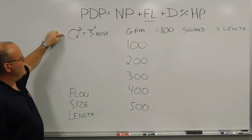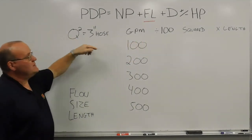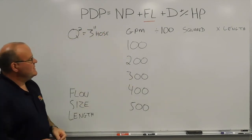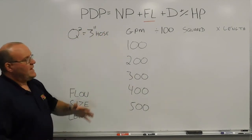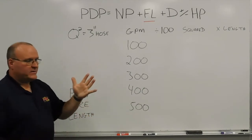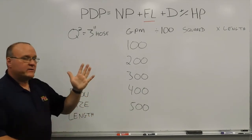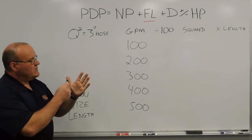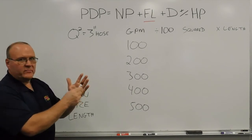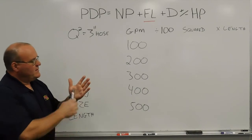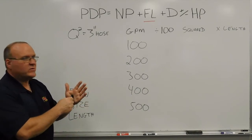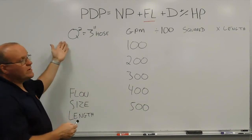Q-squared is basically the gallons per minute squared after it's been divided by 100. This makes it a hand method — useful at 2 o'clock in the morning. You have your hand here, your hillbilly calculator, if you will. 100, 200, 300, 400, and 500 from left to right, thumb to pinky. And then on the palm, you visualize a multiplication symbol. That gives you your squared.